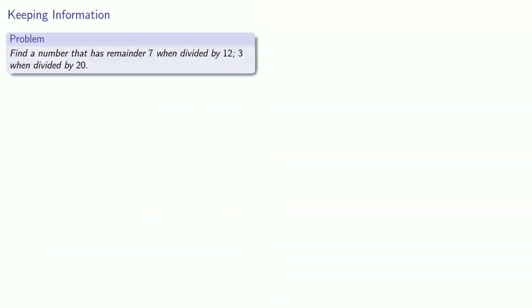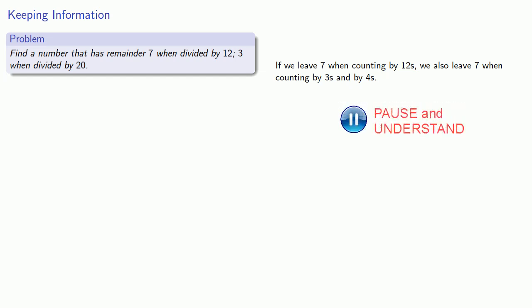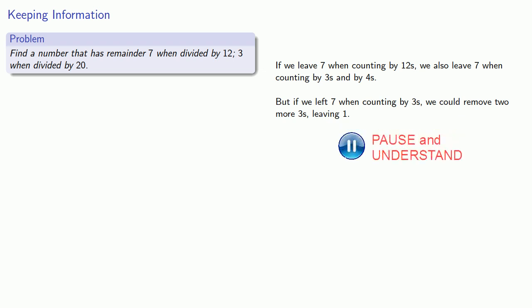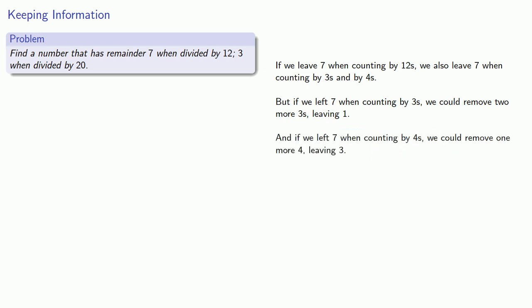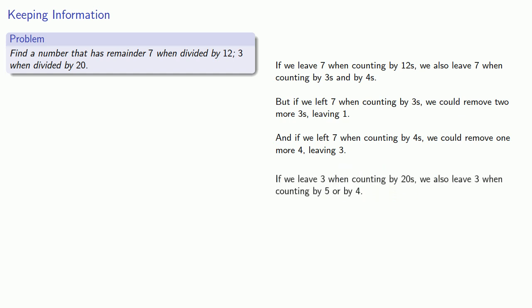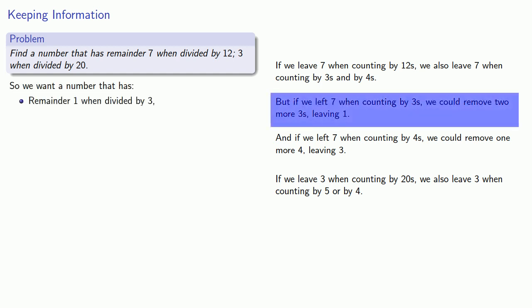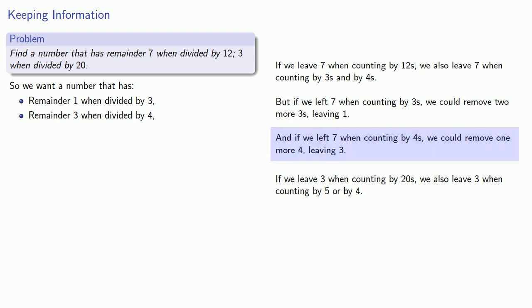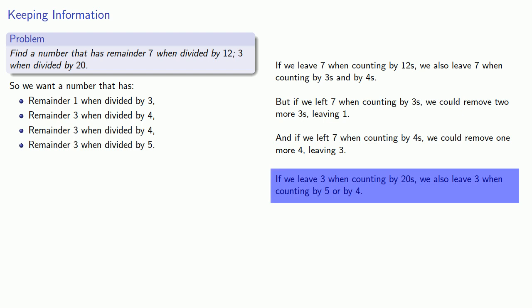For example, if we want a number with remainder 7 when divided by 12 and 3 when divided by 20, we proceed as follows. If we leave 7 when counting by 12s, we also leave 7 when counting by 3s and by 4s. If we left 7 when counting by 3s, we could remove 2 more 3s, leaving just 1. If we left 7 when counting by 4s, we could remove another 4, leaving 3. As for the 20, if we leave 3 when dividing by 20, we also leave 3 when dividing by 5 or by 4. So putting this together, we want a number with remainder 1 when dividing by 3, remainder 3 when dividing by 4, and remainder 3 when dividing by 5.